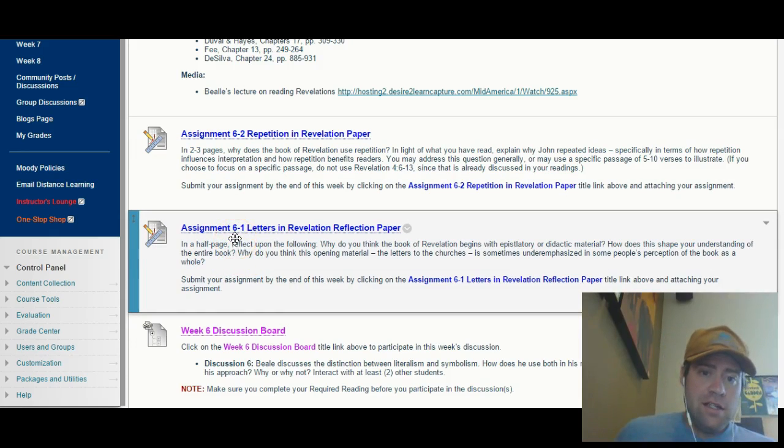Now, 6-1, this is letters in Revelation paper. So in this one, we're starting with just a half-page reflection, meaning based on the study and reading that you had thus far. Why do you think the book of Revelation begins with epistolatory? I don't even know how to say that, to be honest with you. I never use that word. Epistolatory? Epistle-like reading or didactic material.